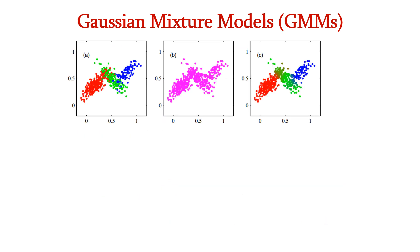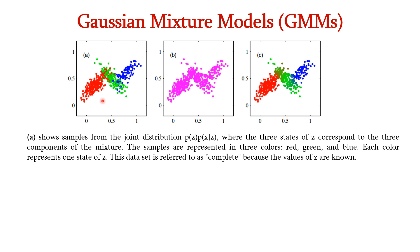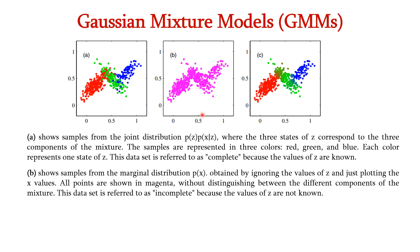Now let us understand GMM using three plots A, B, and C. In plot A, we have the joint distribution P(z) times P(x | z), called the prior probability, where three states of z correspond to three mixture components. Samples are shown in red, green, and blue — each color representing one state of z. This dataset is called complete because we assume z values are known. In plot B, we have the marginal distribution P(x), where z values are ignored and all points are shown in magenta without distinguishing components. This is called incomplete data.